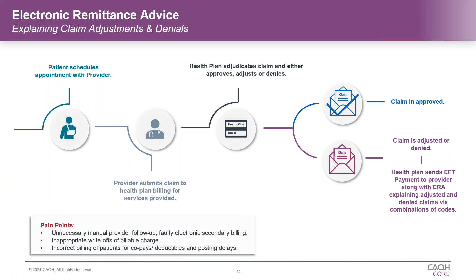Moving into the specific requirements related to the 835 transaction — as Pat explained, much of the rules we've set up around the 835 ensure that the provider gets the data they need to understand the reason for a denial or adjustment. How do providers make sure it's accurate? How do health plans accurately determine which CARC to use, which group code to use? Because every health plan has their own policies — and how do you ensure that from a health plan in the northeast to one in the west to one in the south, we all do this the same way so providers understand the messaging clearly and efficiently?